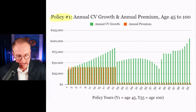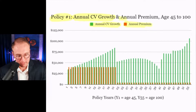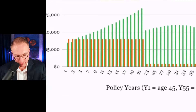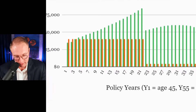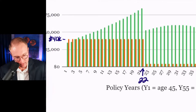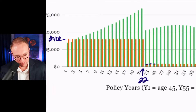Chart time. This is policy number one — we're looking at annual cash value growth. Annual cash value growth is in green, meaning the increase in cash value in a given year. And in orange, we're looking at annual premiums. We've got our $40,000 annual premium — that's the height of those orange bars — payable out until policy year 22. And then these little bars continuing out here, that's our base premium. Little bitty base, big old PUA, payable out to year 22.